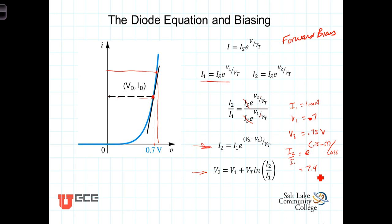Or equivalently, I2 is 7.4 times as big as I1. So we see a 740% increase in the current when we increase the voltage by only 0.05 volts, less than 10%. A less than 10% increase in the voltage corresponds to a 7.4 times increase in current.